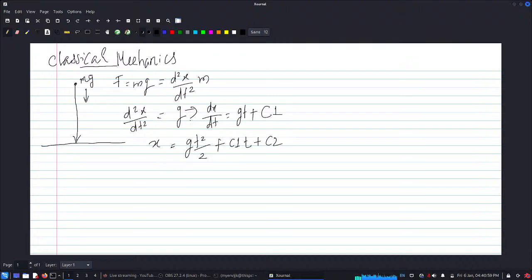t = 0 at x0, it is at rest, so I say v = u = 0. With t = 0, this is 0, so c1, that gives us c1 = 0. And again here, say this is